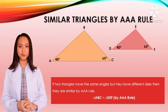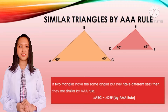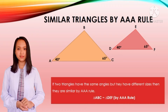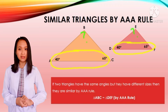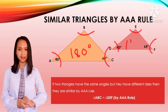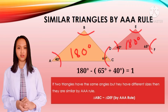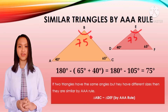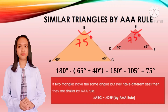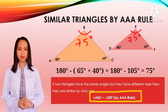Similar triangles by AAA rule: if the two triangles have the same angles but they have different sizes, therefore these triangles are similar by AAA rule. For example, triangle ABC and triangle DEF. As you can see, there are two given angles and one is missing. We know that the sum of all angles of a triangle is 180 degrees, so to find the missing angle, we add the two given angles and subtract from 180. So 40 plus 65 is 105, and 180 minus 105 is 75. So the value of angle B and angle E is 75 degrees. All of their corresponding angles are the same, therefore triangle ABC is similar to triangle DEF by AAA rule.